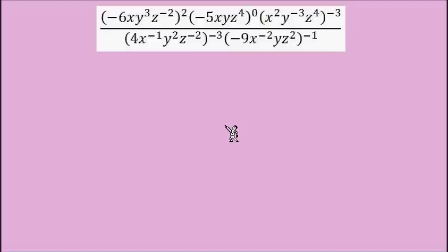Here's another example for us to look at. I picked a problem that looks like it might be pretty difficult, but we have some good rules and good steps that are going to make this problem manageable. We start, as always, with exponents that are outside of parentheses, working them into each exponent inside the parentheses. Even if I don't see an exponent, I should think of it as having an exponent of one so I don't overlook it.